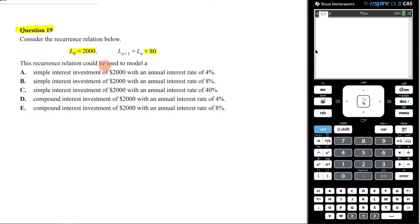This recursion relation could be used to model A. Now, we immediately know that it's not going to be a compound interest case because we're not multiplying, we're adding, which means it has to be simple interest.